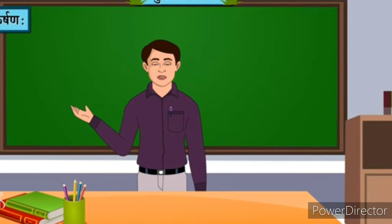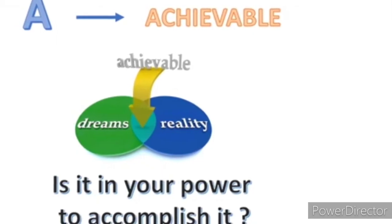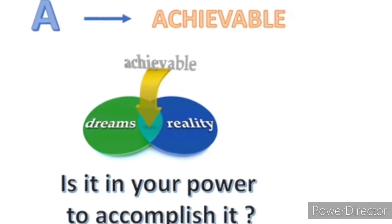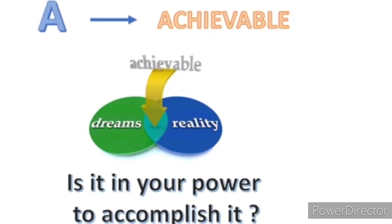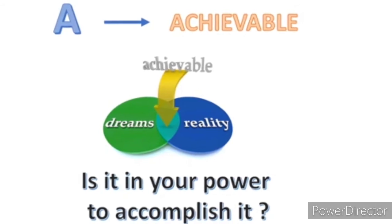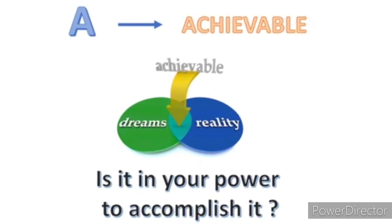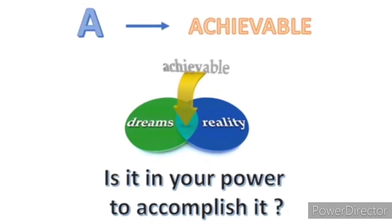Now come to page number 23 and the third rubric: Achievable. Setting goals that can be completed in the designated period of time. Often, these goals may act like stepping stones to help meet broader goals that further define a career. As students, we can't become a president or a prime minister right now, but we can hope to reach those heights in future. Achievable means attainable — setting goals that can be completed in the given, designated period of time. These goals act like stepping stones or milestones that give us proper direction in life.